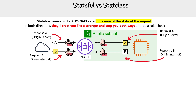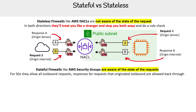Now let's take a look at stateful firewalls, like AWS Security Groups. They are aware of the state of the requests. For security groups, they allow all outbound requests, and responses for requests that originated outbound are allowed back through. Understand that different virtual firewalls work differently — don't look at this and think all stateful firewalls work this way. It's just the way security group firewalls work.